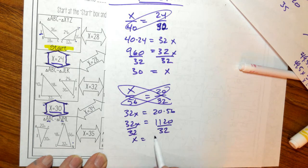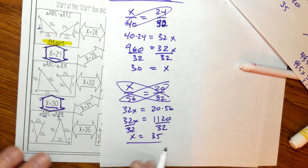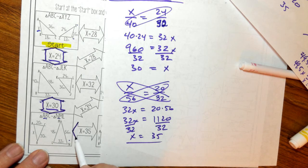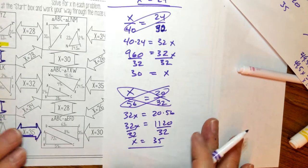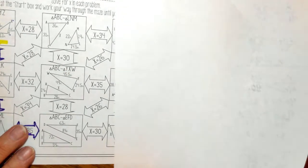So my X is 35. So this is where I'm headed right over here. I'm going to go down this arrow. And I'll go to my next problem.